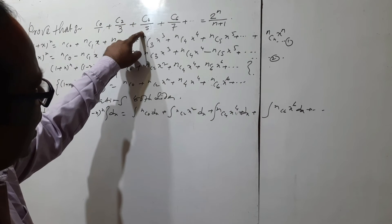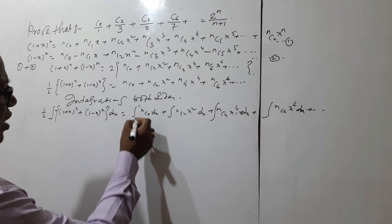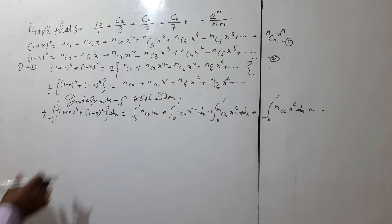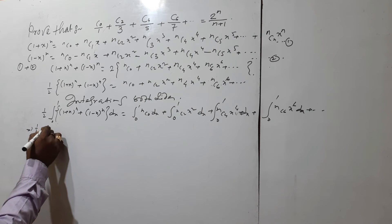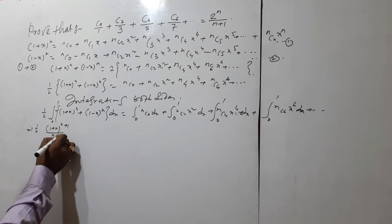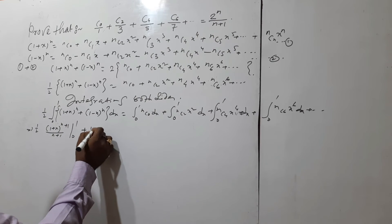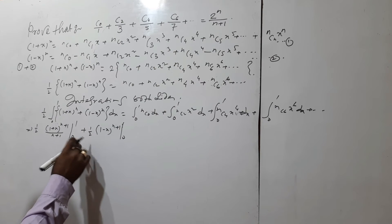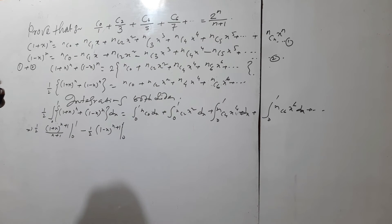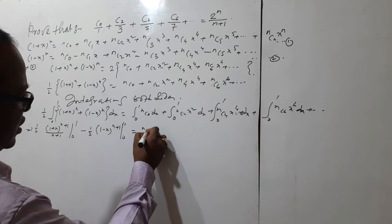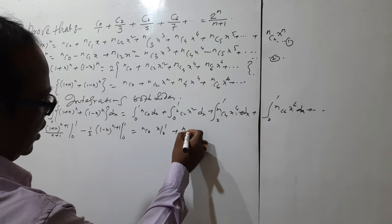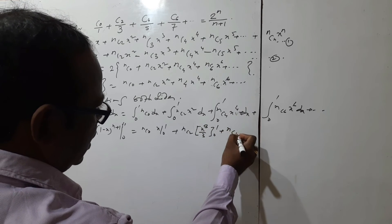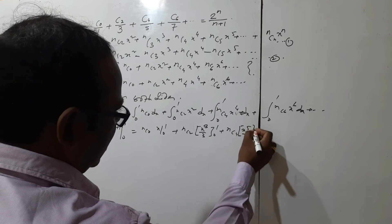We put the lower limit as 0 and the upper limit as 1. Integrating the left-hand side: [(1+x)^(n+1)]/(n+1) and [(1-x)^(n+1)]/(n+1), both evaluated from 0 to 1. The right-hand side becomes nC0·x plus nC2·x³/3 plus nC4·x⁵/5, evaluated from 0 to 1.